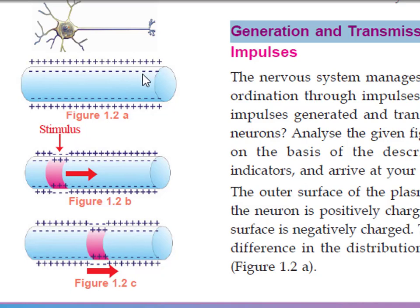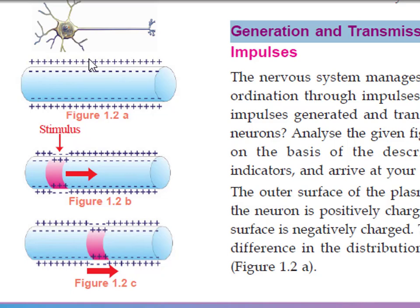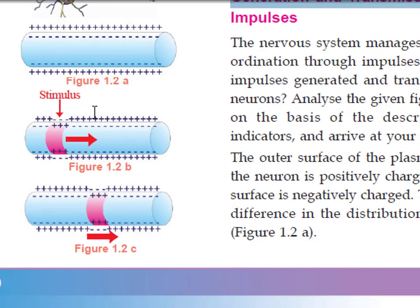On this plasma membrane, the outer surface is positively charged and the inner surface is negatively charged. On either side of the plasma membrane, positive charge on the outer surface and the inner surface is negatively charged. This is due to the difference in the distribution of certain ions.